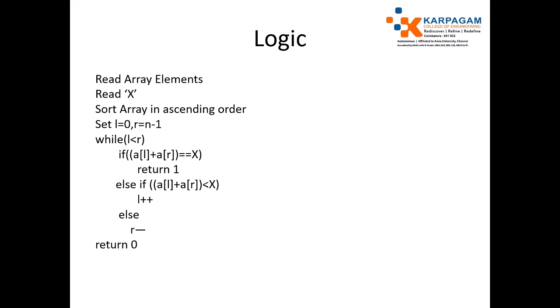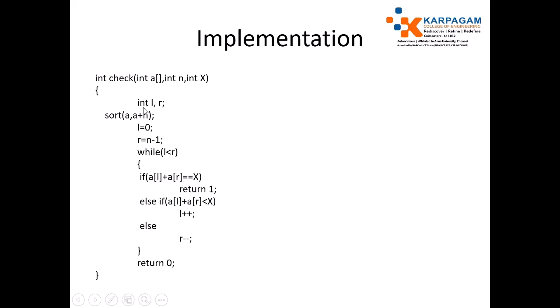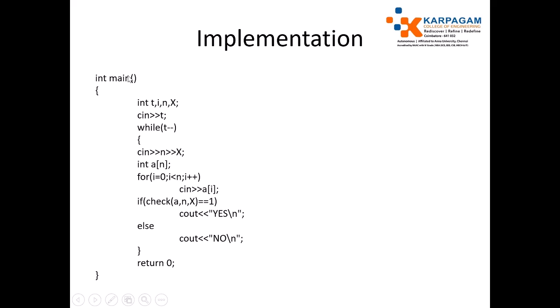Initially set L value as 0 and R value as N minus 1. Use a while loop: while L less than R, check if A[L] plus A[R] equals X, just return 1. Else if A[L] plus A[R] less than X, just increment L. You need more value which is higher. If A[L] plus A[R] greater than X, decrement the R value by 1. If this if condition never works, it will come out of the loop and return 0.